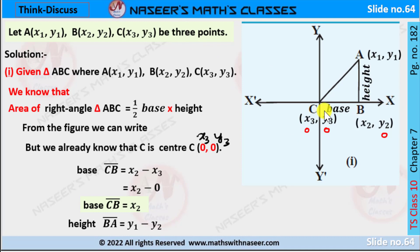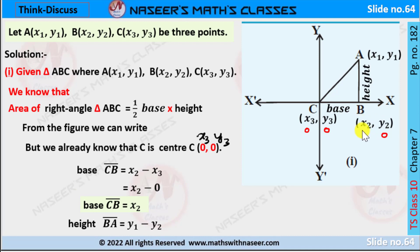We already know this is a right angle triangle, so the area of right angle triangle ABC equals half times base times height. From the figure, C is at the origin (0, 0). The base CB equals the difference of x2 and x3; since x3 is 0, base CB equals x2 minus 0, so base CB equals x2.